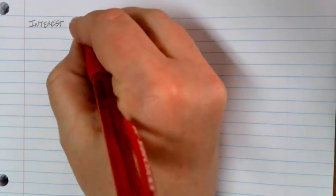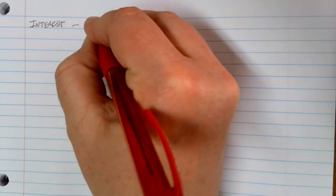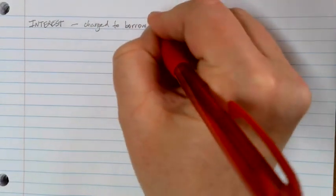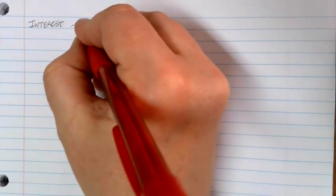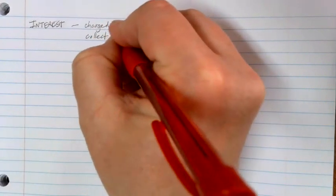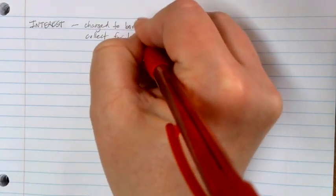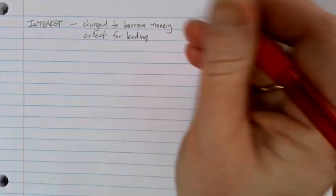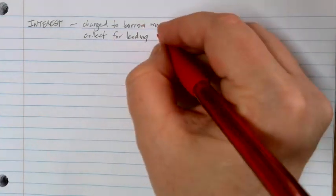When we're working with financial formulas, one of the key concepts we need to deal with is this idea of interest. Interest is the amount that is charged when you borrow money, or it's the amount that you collect for lending money. It can work against you where you have to pay extra money, or it can work for you where you get extra money beyond what you were initially investing.